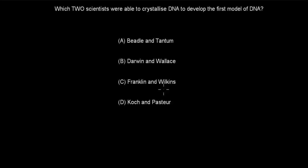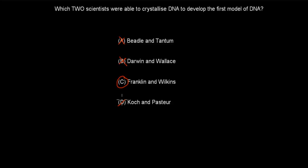Welcome back. The correct answer is C. Beadle and Tatum had to do with the one-gene, one-protein hypothesis. Darwin and Wallace had to do with natural selection. Koch and Pasteur have to do with pathogens and the immune system. So C — Franklin and Wilkins — is correct.